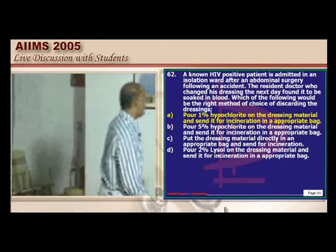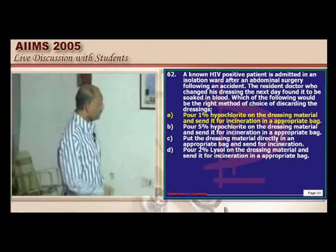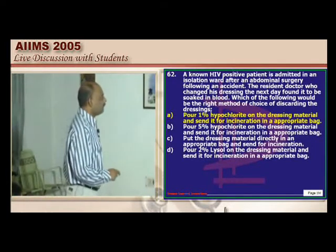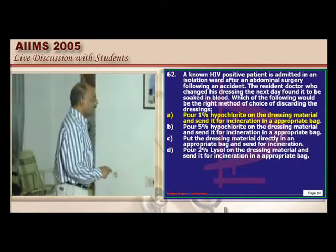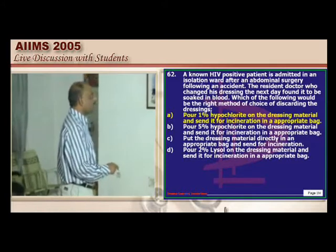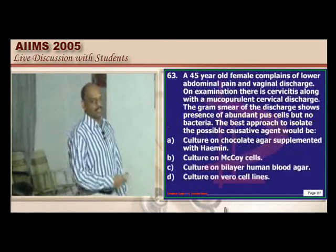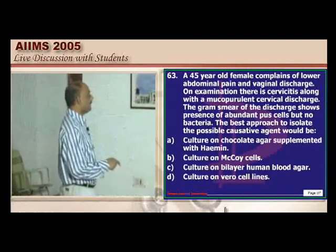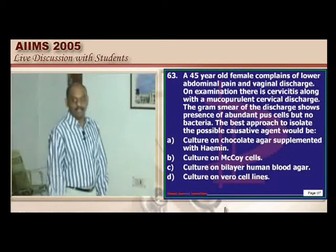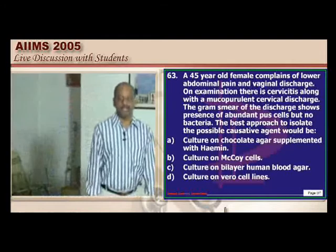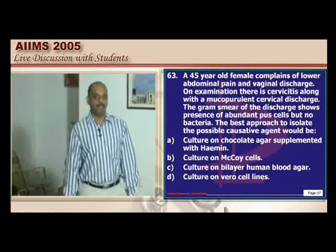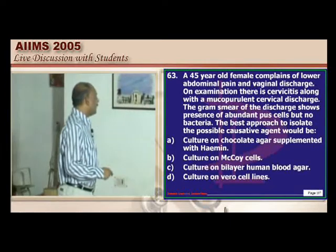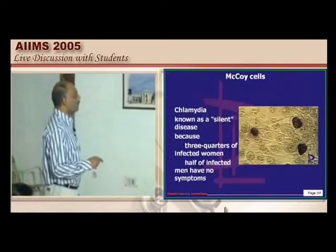A known HIV patient admitted for abdominal surgery following an accident, and dressing is soaked in blood — what is the best method to dispose of it? First, apply 1% hypochlorite on the dressing material, then send it for incineration in a properly closed, appropriate bag. The closed bag is very important.